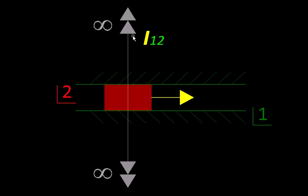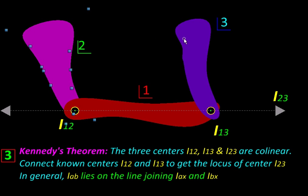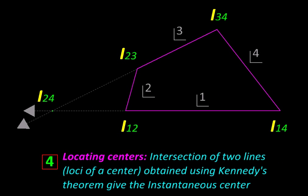the relative center lies at infinity on the line perpendicular to the guide, because a straight line is nothing but an arc of an infinite circle, so its center lies at infinity. Here is how we can express Kennedy's theorem: suppose we have links one, two, and three connected with revolute pairs like this. Then we have centers I_12 and I_13 over here, and the relative center of link two and three would be located on the line joining I_12 and I_13.